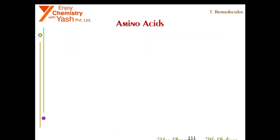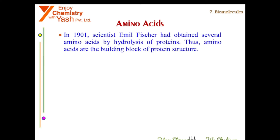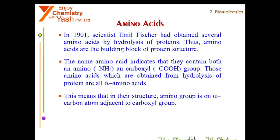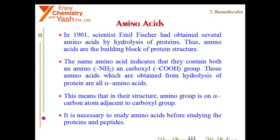Now we will understand what amino acids are — their structures, classification, and configurations. In 1901, scientist Emil Fischer obtained several amino acids by hydrolysis of proteins. Thus, amino acids are the building blocks of protein structure. The name amino acid indicates that they contain both an amino (NH2) and a carboxyl (COOH) group. Those amino acids obtained from hydrolysis of proteins are all alpha amino acids, meaning their amino group is on the alpha carbon atom adjacent to the carboxyl group. It is necessary to study amino acids before studying proteins and peptides.